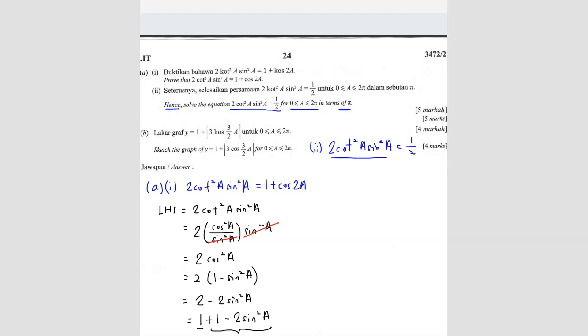So from here, it's actually the same as the top part here. We managed to prove that this is equals to this, so we can straight away use this. So that means 1 plus cos 2A equals to 1 over 2. So cos 2A equals to 1 over 2 minus 1, you get negative 1 over 2. So from here, you can find your reference angle.